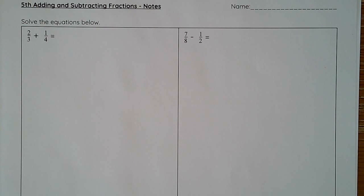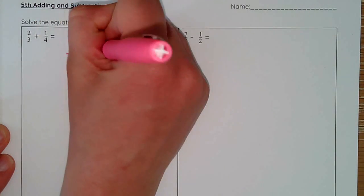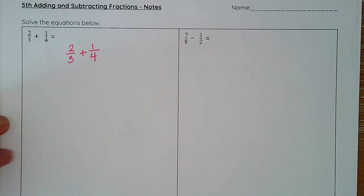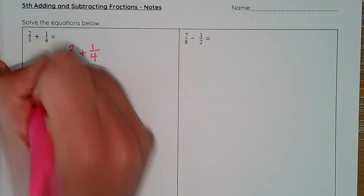We've got two-thirds plus one-fourth. So the first thing I'm going to do is I'm going to look at my denominators. I cannot add these together as is because my denominators do not match. So I need to figure out how I can make these equivalent fractions so that I have a common denominator.